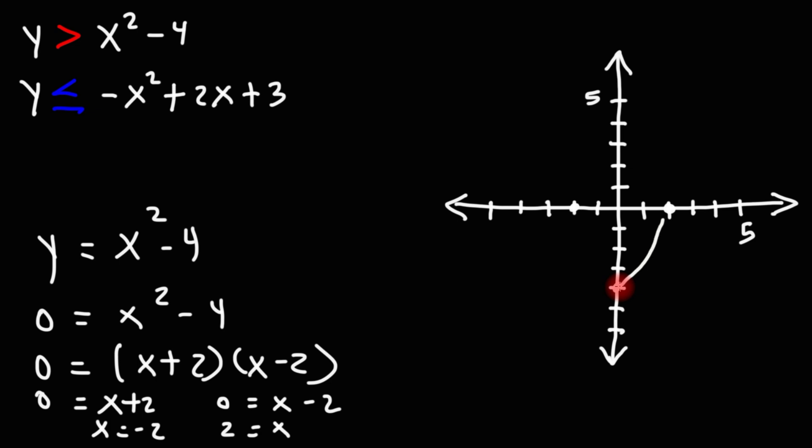So we have a point at 2 and negative 2. So the graph is going to open up like this. So I'm just going to draw a rough sketch.